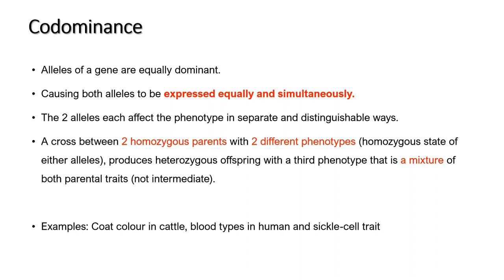Co-dominance occurs when alleles of a gene are equally dominant. This causes both alleles to be expressed equally and simultaneously. The two alleles each affect the phenotype in separate, distinguishable ways, and a cross between two homozygous parents with different phenotypes produces heterozygous offspring with a third phenotype that is a mixture of both parental traits — not intermediate. Examples of co-dominance include coat color in cattle, blood types in humans, and sickle cell trait.